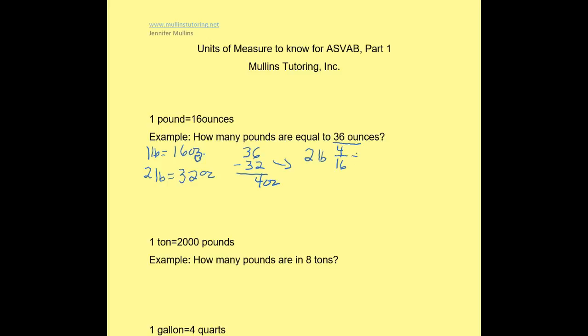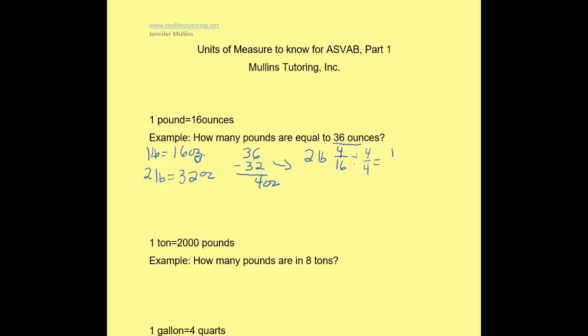So I want to look here and say, alright, what's the common factor? I'm going to look at the smaller of the two numbers, and 4 can go into both 4 and 16. So I'm just going to divide both the numerator and the denominator by 4. So I would end up with 4 goes into 4 one time, and 4 goes into 16 four times, and that's as reduced as I can get. So how many pounds are equal to 36 ounces? It would be 2 and 1/4 pounds.